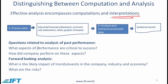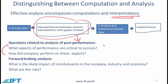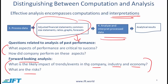The questions related to analysis of past performance are: what aspects of performance are critical to success, and how did the company perform on these aspects? Simply looking at ratios will not answer these questions — they are answered in the analysis phase. You might also look at forward-looking items such as the likely impact of trends or events in the company, industry, and economy, and what risks the company faces. It is this analysis that will help you decide whether or not to make an investment.